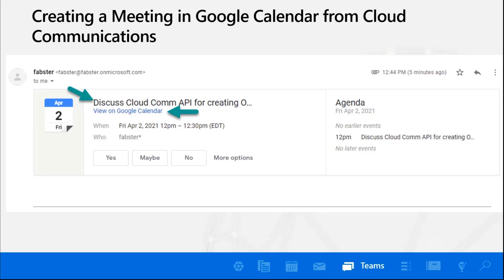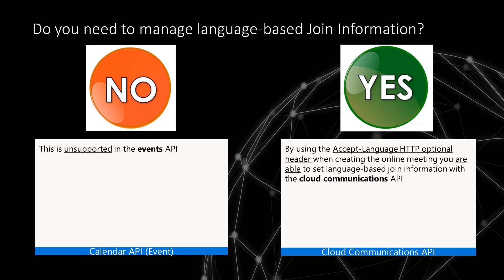This is an example of the control. Do you need to revert from an online meeting? Imagine a scenario where you had an online meeting and wanted to go back to a non-online meeting — could you do that? The answer is no to both APIs. Another question: do you need to manage language-based information? The answer is no if you're using the calendar API. But because the cloud communications API is very nuanced and granular, you're able to do that. You manage that experience by modifying one of the optional HTTP headers — setting it to EN for English, ES for Spanish, FR for French, and so on.